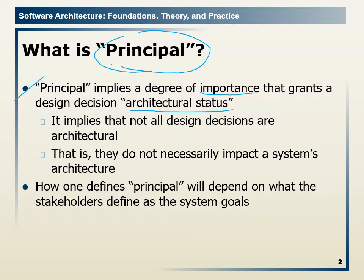The question is: what is architectural status? When we talk about design decisions, before we start developing a project, we try to identify what the design decisions will be. Not all the designs we have randomly identified will be important. Those that are determined to be important and need to be implemented become our architecture — and if it is architecture, it means it has got architectural status.